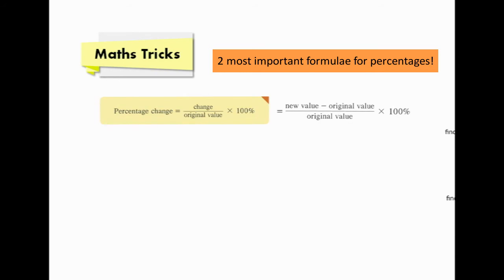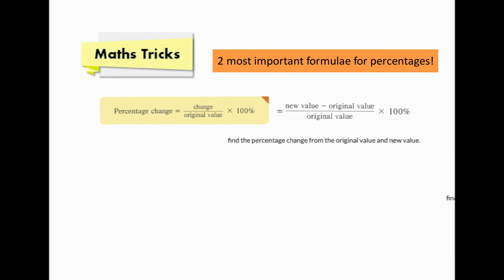Teachers always remind students about this formula: new minus old, then divided by old, times 100%. In Chinese: 新減舊除舊乘100%. That is, new value minus original value, then divided by original value, times 100%. We will use this formula when we need to find the percentage change from the original value and the new value.